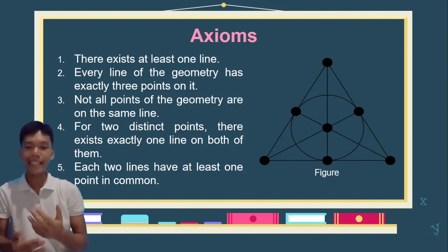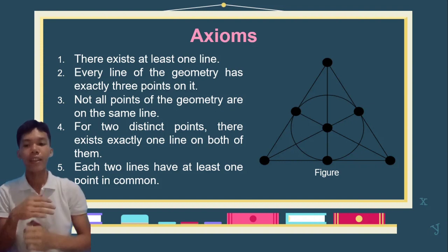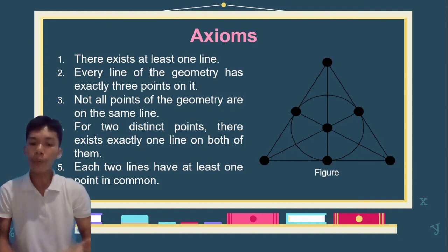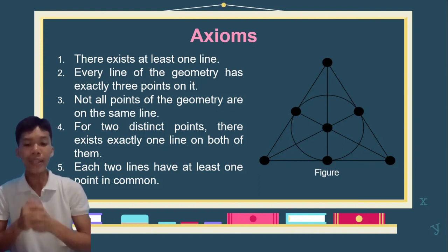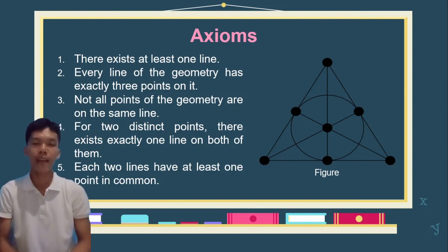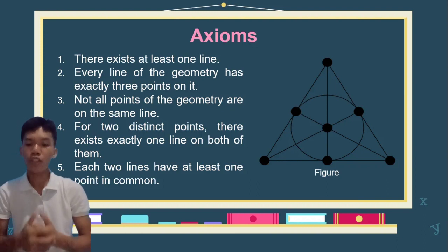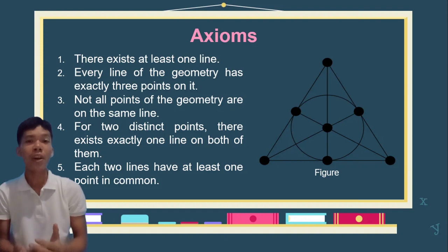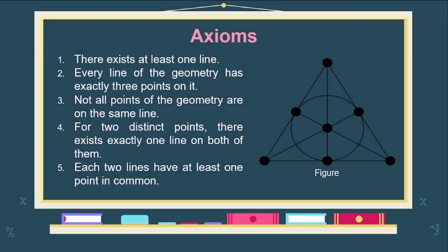There are five axioms in the Fano plane. The first: there exists at least one line. Number two: every line of the geometry has exactly three points on it. The third: not all points of the geometry are on the same line. The fourth: for two distinct points, there exists exactly one line on both of them. And the last axiom: each two lines have at least one point in common.